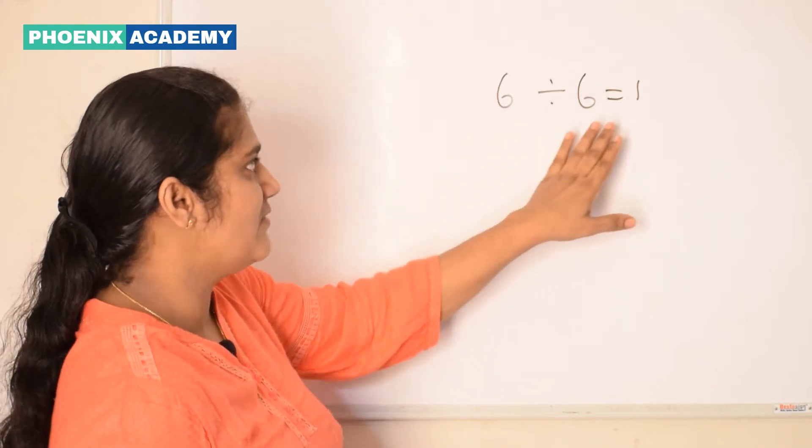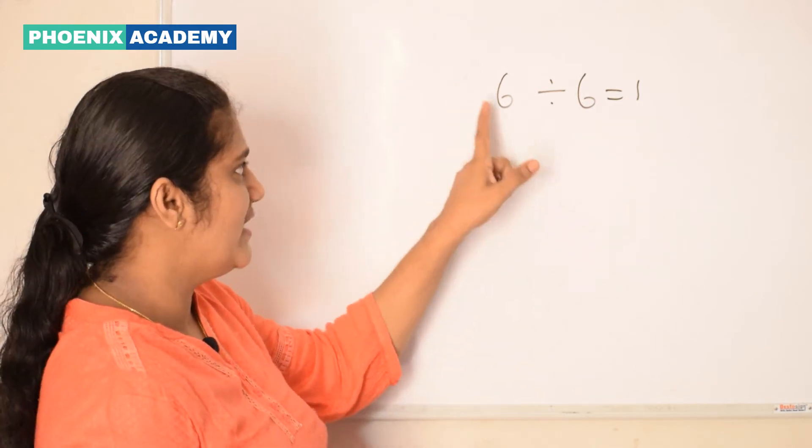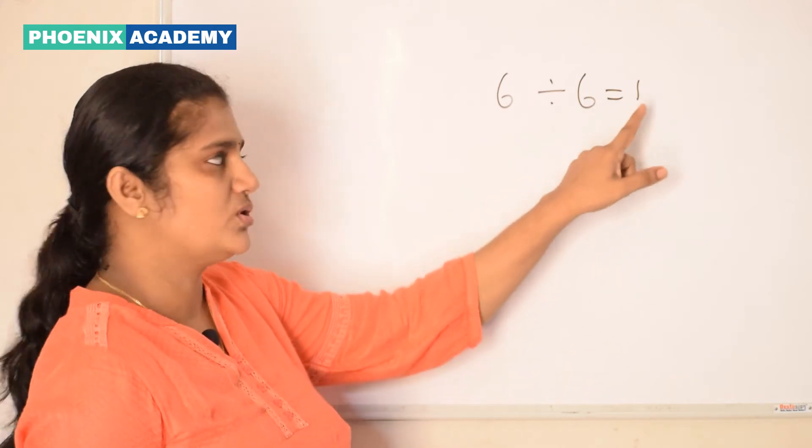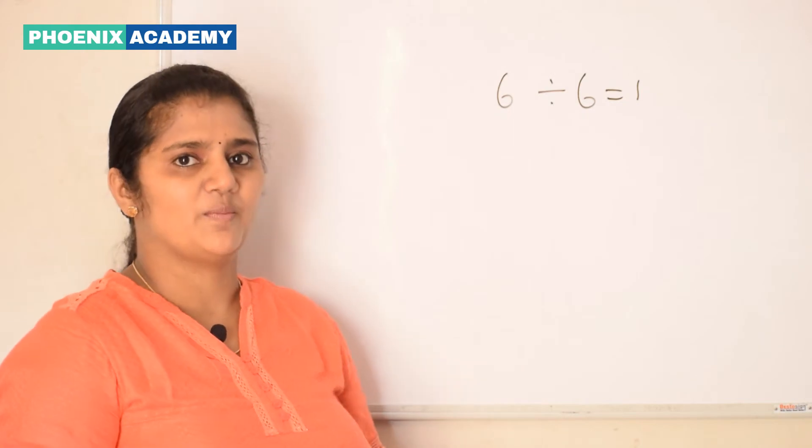So, we can say 6 divided by 6 equals 1. That means, when a number is divided by a number itself, the quotient is always 1. This is the first property of division.